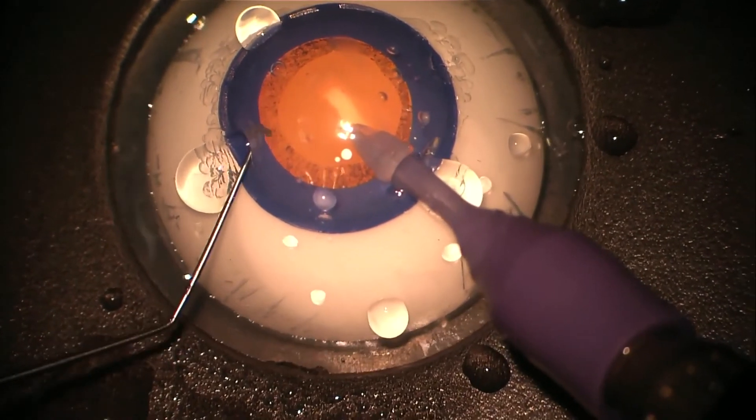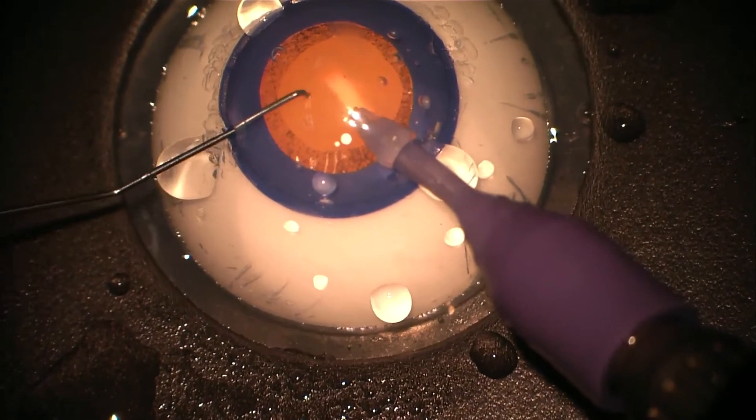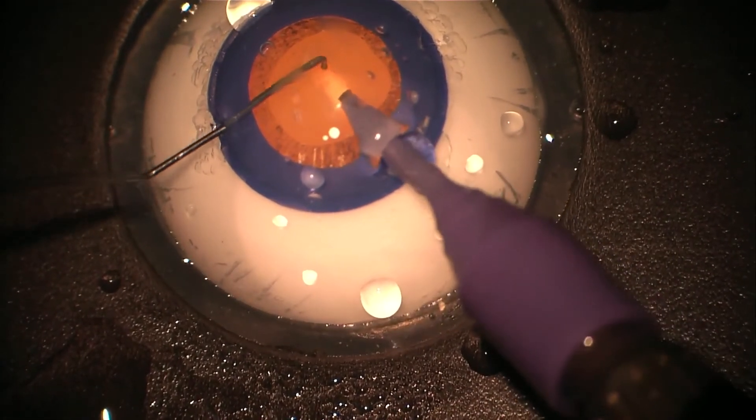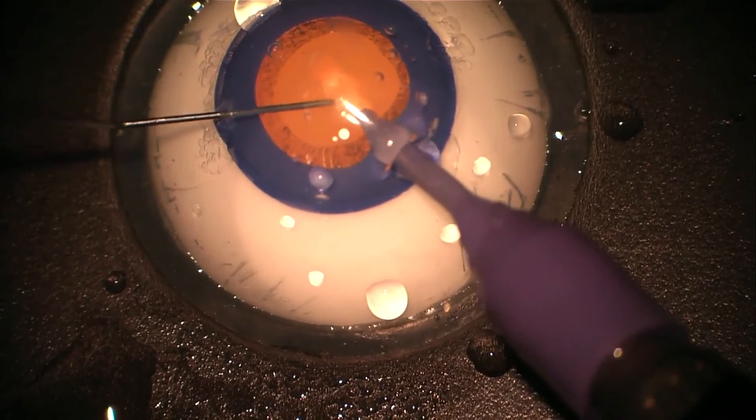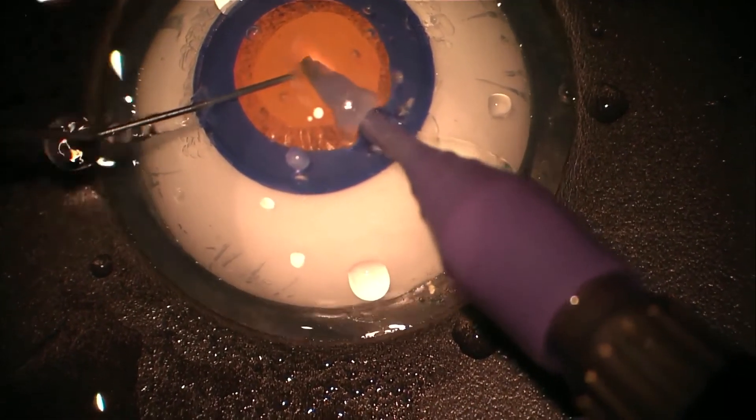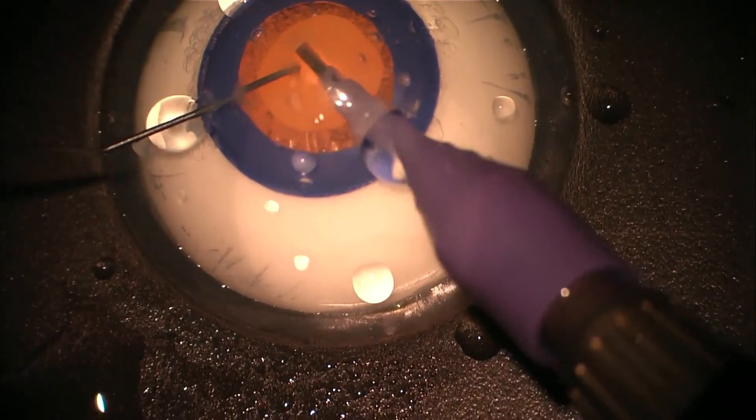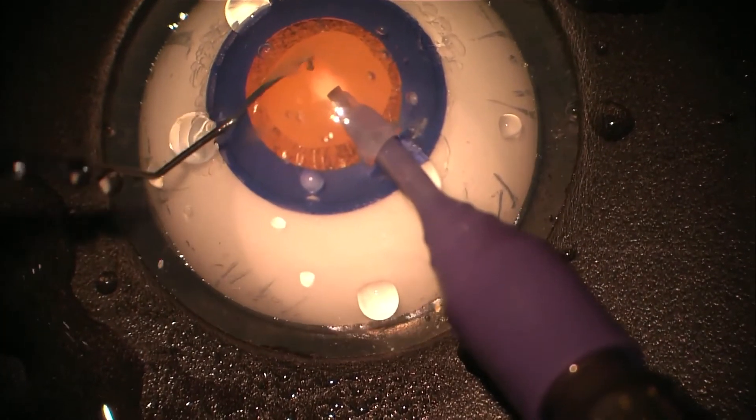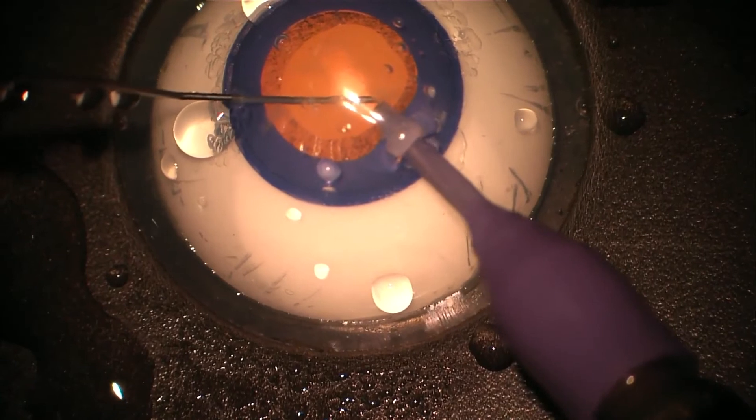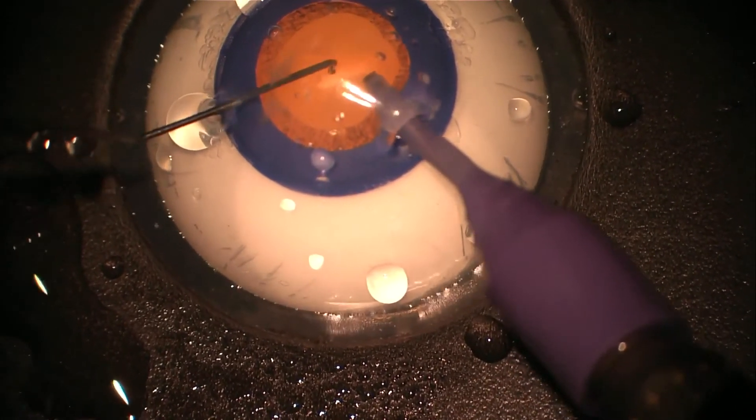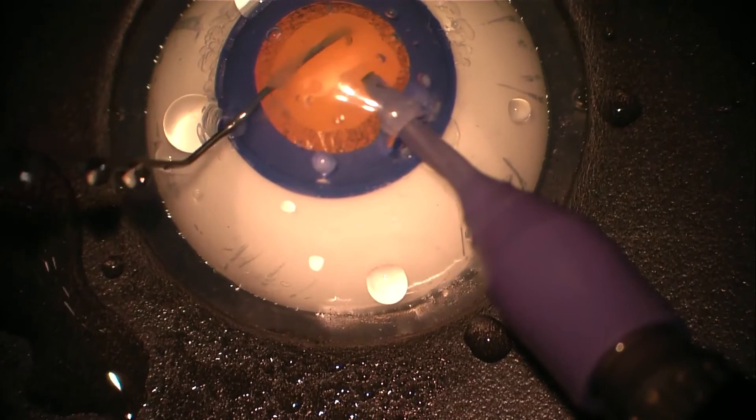Here we can see the second instrument being introduced via the side port and this is going to be used to rotate the nucleus. With the soft gel eyes the lens material is relatively soft and so the second instrument just slides into the lens material a little bit more than it would in a human eye. This is less of a problem with the harder basic faco eyes.